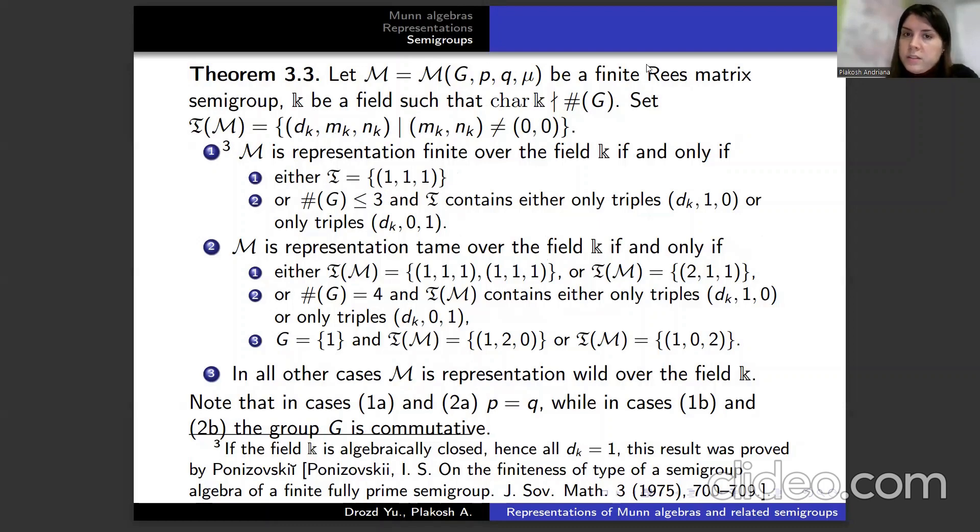M is representation finite over the field k if and only if either T is {(1,1,1)} and order of G is less than or equal to 3, or T(M) is {(1,2,1), (1,1,1)}, or order of G equals 4 and T(M) contains either only triples (dₖ,1,0) or only triples (dₖ,0,1), or s equals 1 and T(M) is {(1,2,0)}. In all other cases, M is representation wild over the field k.